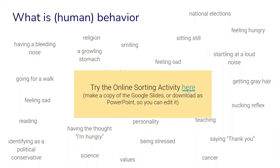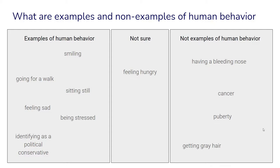Here is also an online sorting activity that you can look at and make a copy of. Here is an example of how you might sort these different examples. There might be some where there is more or less clear agreement — things that are not examples of behavior like cancer, puberty, or getting gray hair, which are just things that happen to our body. And then there might be things where we are not so sure, like feeling hungry.